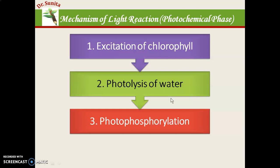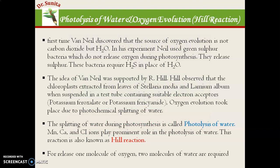First is photolysis of water and oxygen evolution, also named as the Hill reaction, as it was identified by the scientist Robert Hill. The scientist Van Niel first discovered that the source of oxygen evolution is water, not carbon dioxide. He performed an experiment using green sulfur bacteria.